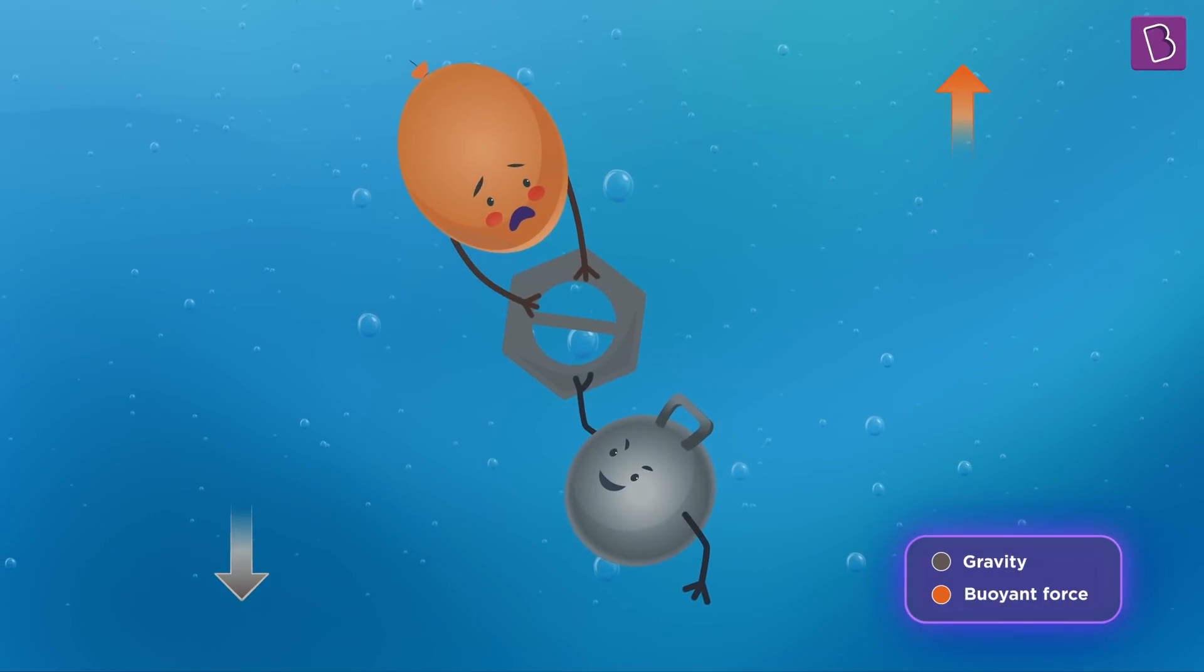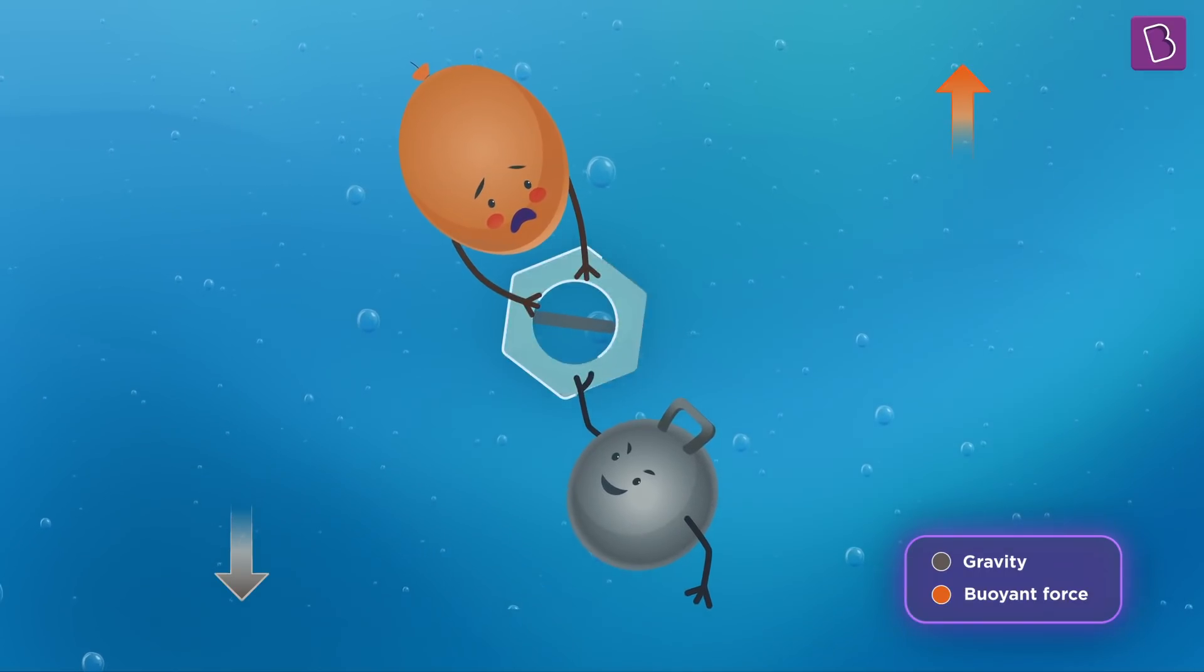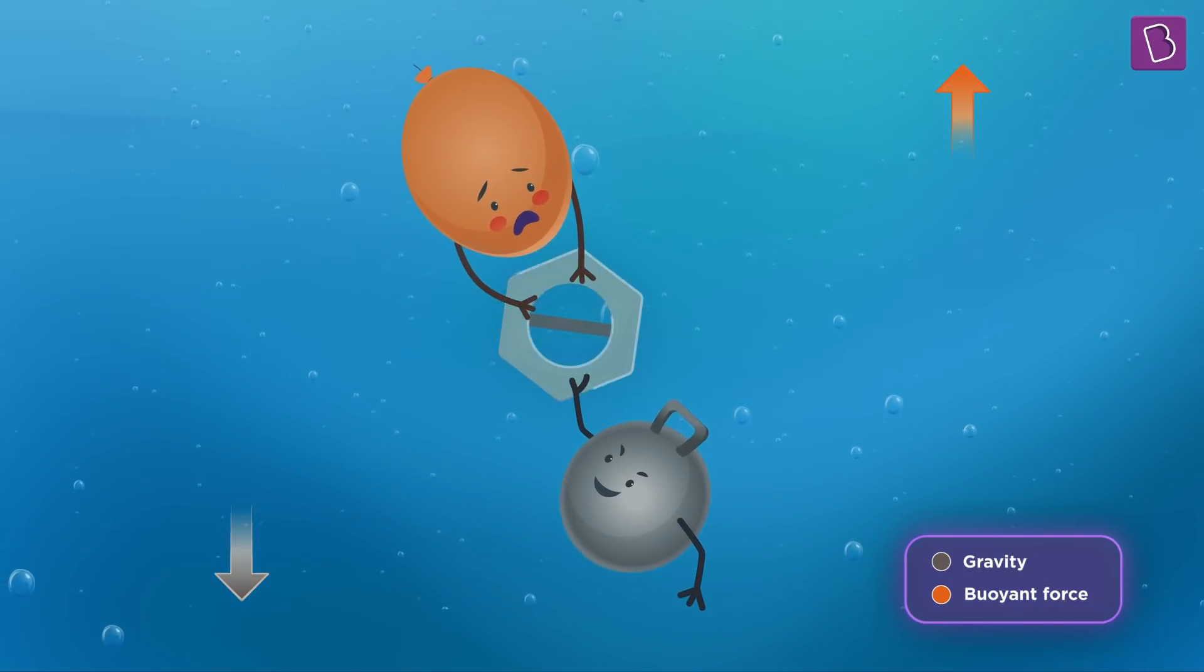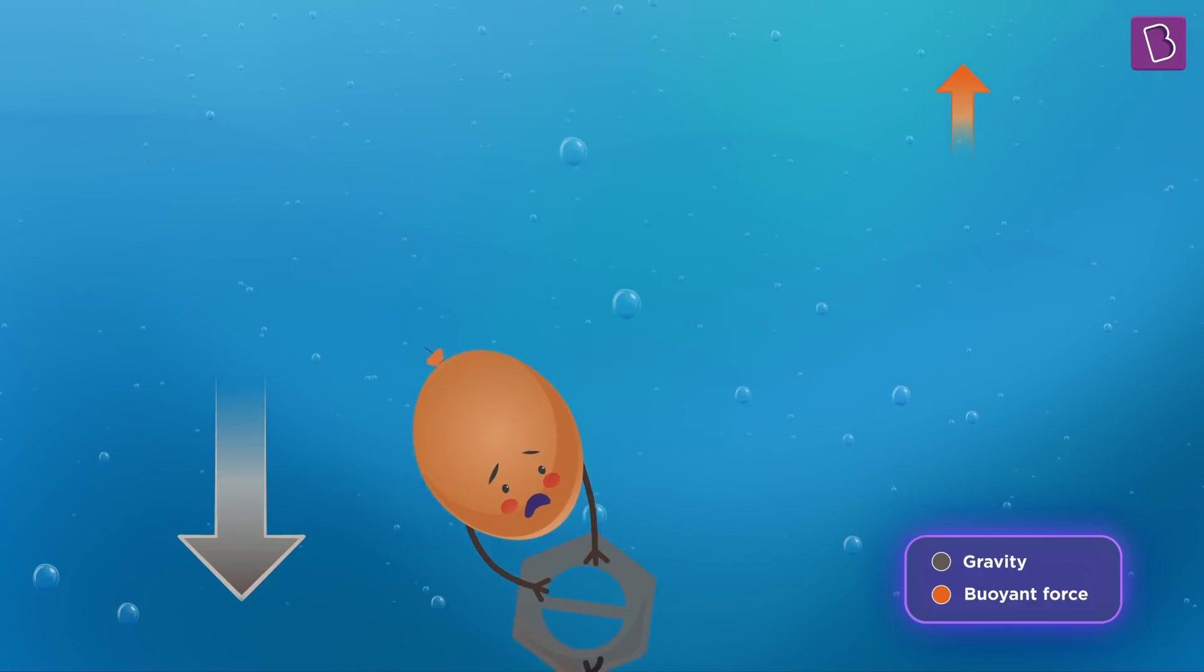We already know that the more the weight of an object, the more is the force of gravity. So the heavier an object is, the more would be the downward force. But the raisin is not gaining or losing any weight during its dance. The weight remains the same. So the pull of gravity remains identical throughout the dance of the raisins.